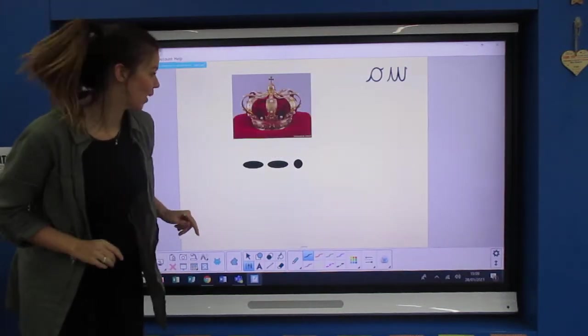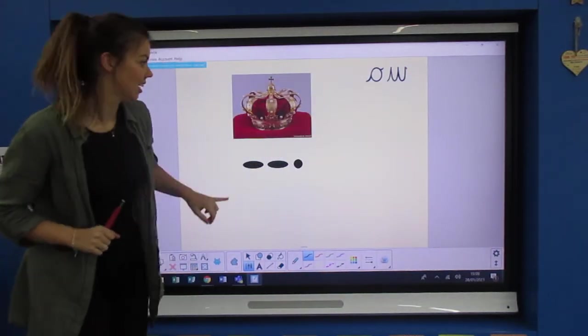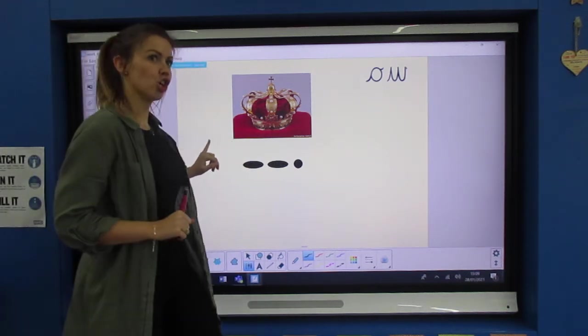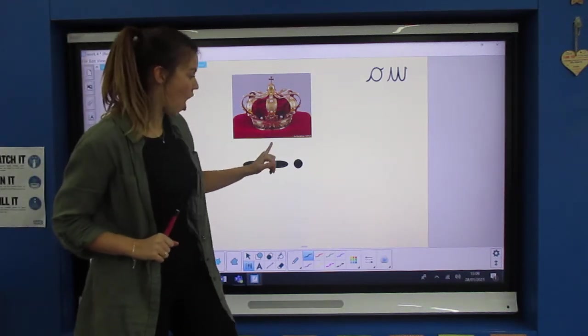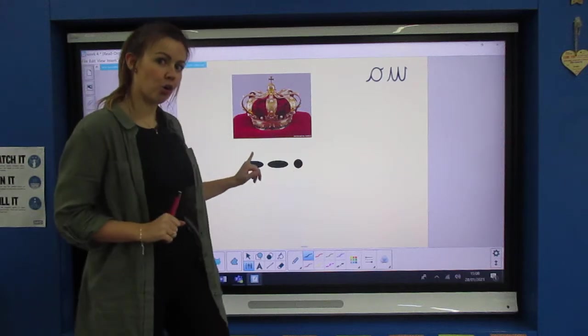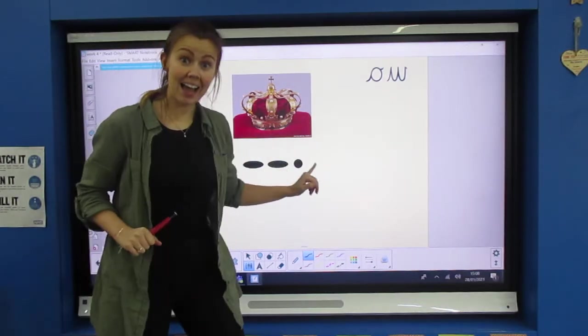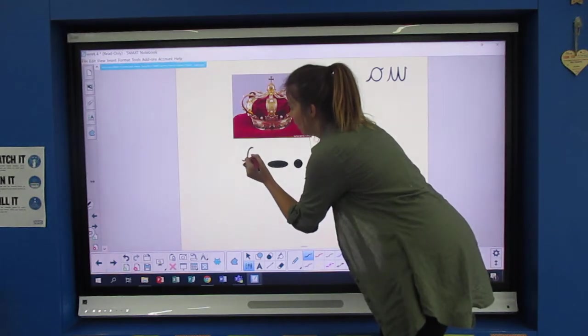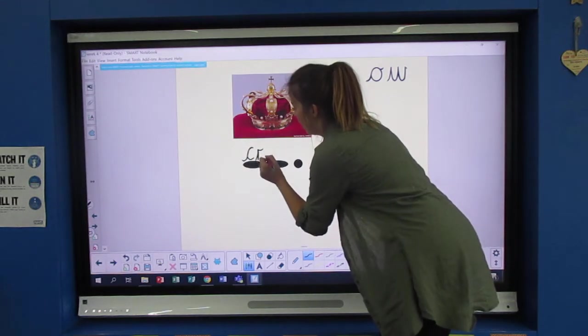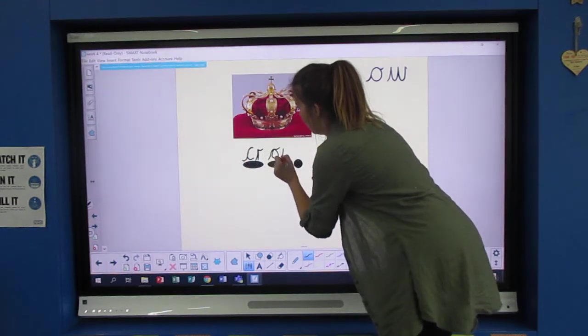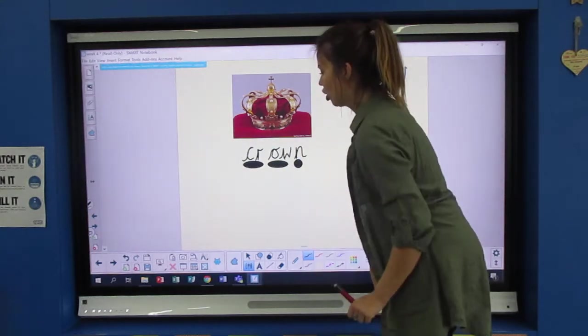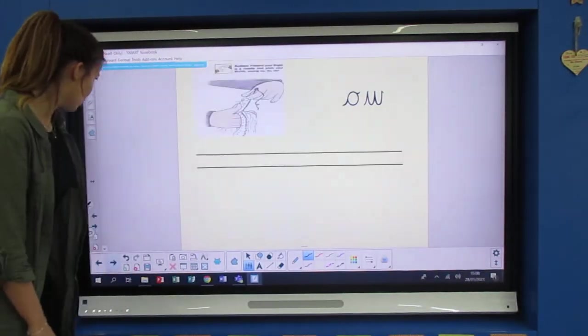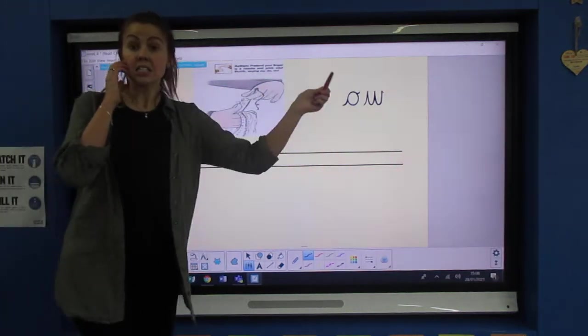Last one. I've got another digraph at the beginning. It's a cr, cr, cr, ow, n, cr-ow-n, crown. Like the Queen wears that crown. Cr-ow-n, cr-ow-n, crown.